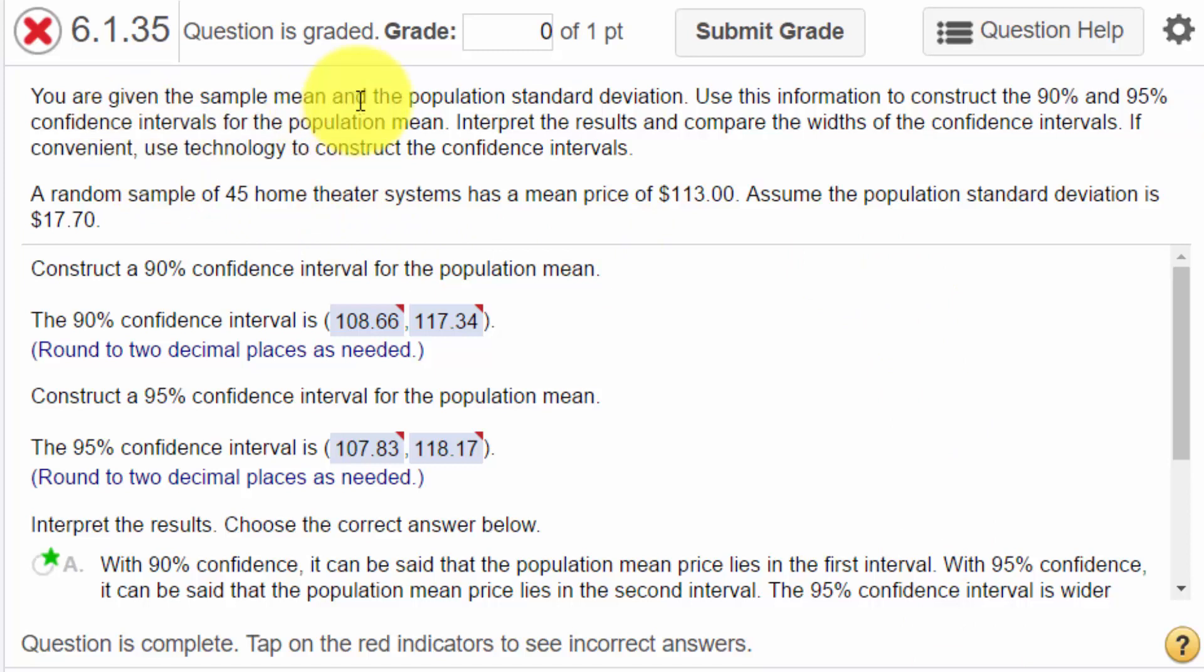We're given a sample mean and a population standard deviation. That's important. We're given the population standard deviation, not the sample standard deviation. So that helps us save a step. We want to use this information to construct the 90% and 95% confidence intervals for the population mean. By that we are taking the sample mean as an estimate of the population mean. And by using the population standard deviation, in this case we're going to use the normal curve, z-score, because we've got more than 45 home systems and we know the population standard deviation. Those are two things that always pretty well tell you you can use the z-test to solve these things.